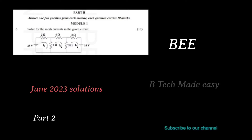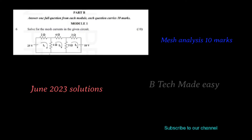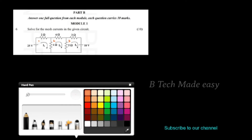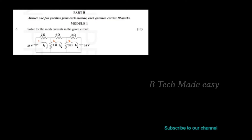We have a question about all four mesh currents in the given circuit. How many meshes does this circuit have? This is 1, this is 2, and this is 3. In these three meshes, the currents i1, i2, and i3 are calculated.